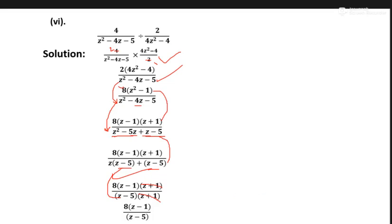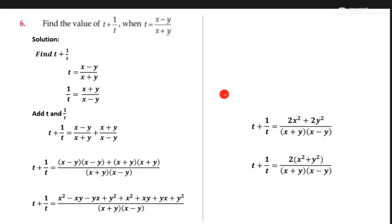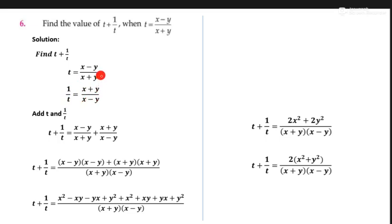Now question number six: we find the value of t plus 1 upon t when t equals x minus y upon x plus 1. We need to find t plus 1 upon t when t is equal to x minus y upon x plus y. We take reciprocal of t, so we write x plus y upon x minus y. Now we add t plus 1 upon t: we write the value of t plus the value of 1 upon t, which is x plus y upon x minus y.